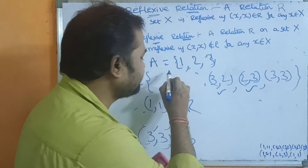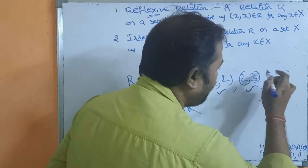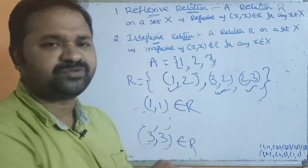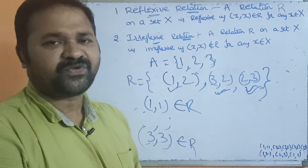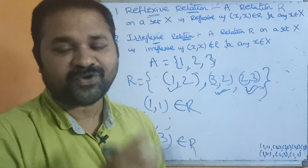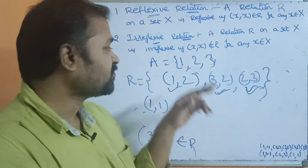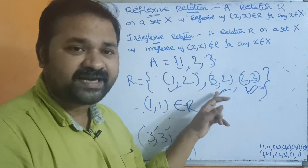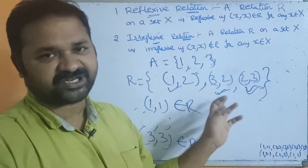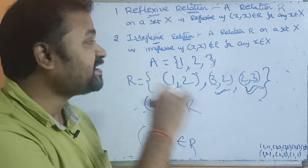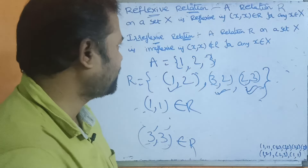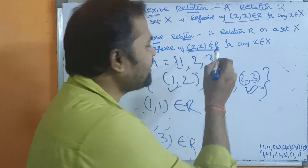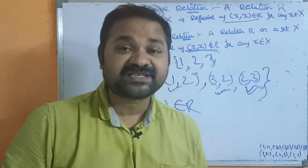Let us modify the relation by removing the problematic pairs. The new relation contains only (1,2), (3,2), and (2,3). Now (1,1) is not present, (2,2) is not present, and (3,3) is not present — so we can say this is an irreflexive relation. To summarize: if (x, x) belongs to R, it is a reflexive relation; if (x, x) does not belong to R, it is an irreflexive relation.